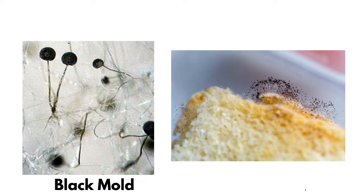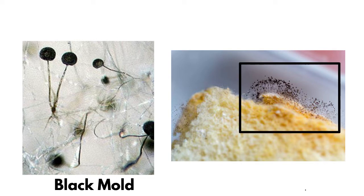Let us take an example of a mold called rhizopus stolonifer which is commonly known as black mold. It is the most common and fast growing bread mold. Hence, it is often the first mold to appear on the stale bread.